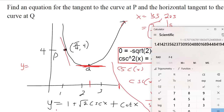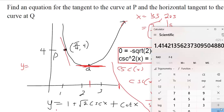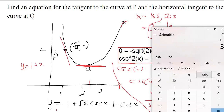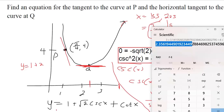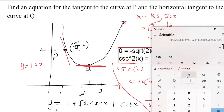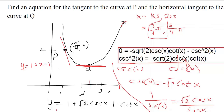That gives us 2, so 1 plus 2. Then we plug in cotangent of x at x equals 3π/4 — cotangent is the reciprocal of tangent — and that's negative one. So I plugged our x-coordinate in and got y equals 2. The equation of the horizontal tangent line is y equals 2.